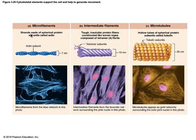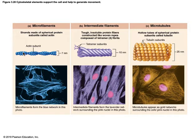Microfilaments have a spherical protein — for example, structures called actin. We're going to be taking a look at some actin subunits when we talk about muscle contractions; they're really important. But actin actually does other things as well, which we'll talk about down the line.